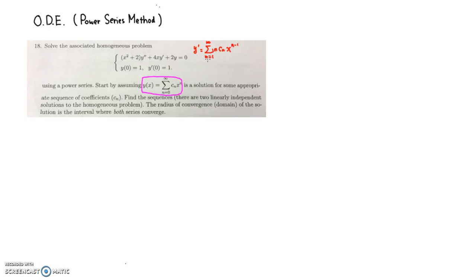Since there's n there, when n equals 0 the term is 0 anyway, so that's why I'm starting from 1. Then the next step is we need to take another derivative, so y double prime is going to equal a summation. n goes from 2 to infinity. cn is just a constant, and the derivative of x to the n minus 1 gives us n minus 1 times cn times x to the n minus 2. So those are the first derivative and the second derivative.